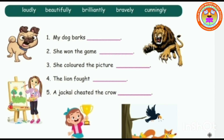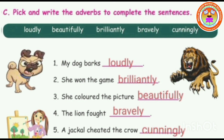Section C: options are given — fill in the sentences. My dog barks. She won the game. She coloured the picture. The lion fought. A jackal cheated the crow. Answers: my dog barks loudly. She won the game brilliantly. She coloured the picture beautifully. The lion fought bravely. A jackal cheated the crow cunningly.